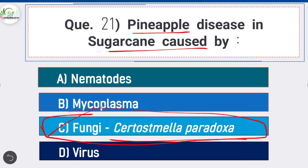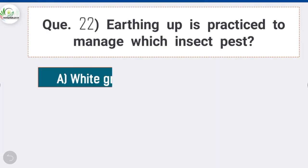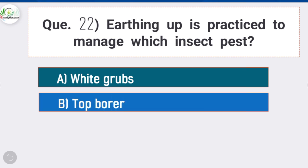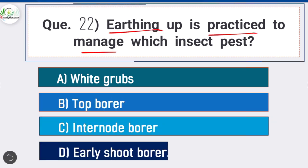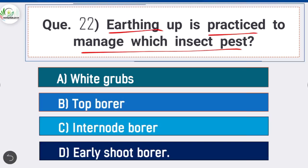Question 22: Earthing-up is practiced to manage which insect pest? Option D is correct: early shoot borer. Earthing-up is practiced to manage early shoot borer, and it is done in June to July.